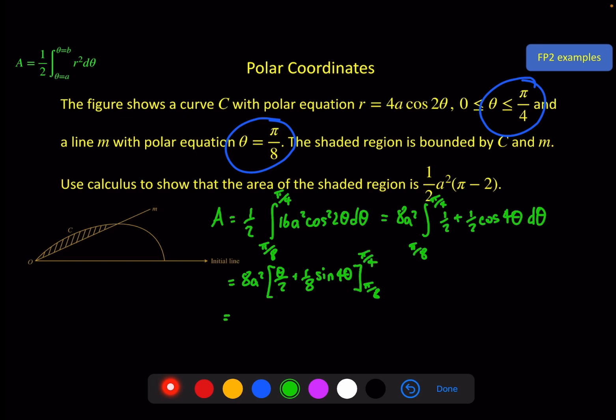Putting in those limits. 8a². θ π/4 over 2 is π/8. Plus 1/8 of sin 4 times π/4 gives me a π and sin of π is 0 so we get 0 there. Minus the lower limit. π/8 over 2 is π/16. Plus 1/8 times sin of 4 times π/8 is π/2. Sin of π/2 is 1 so that's 1/8.